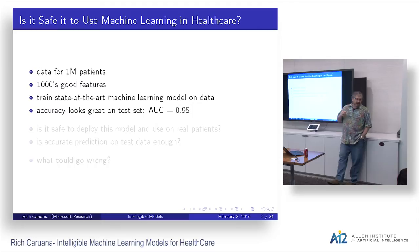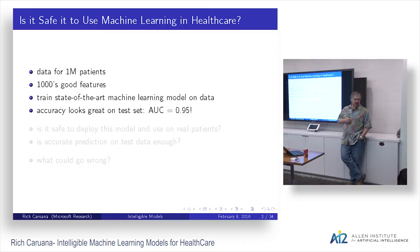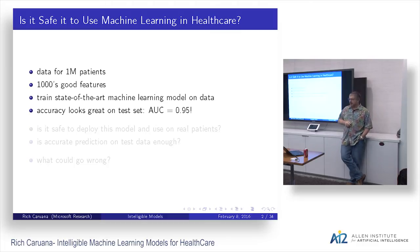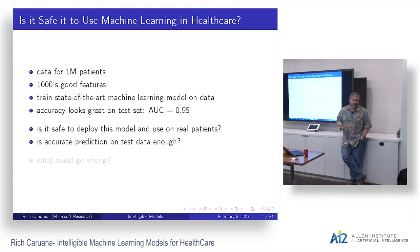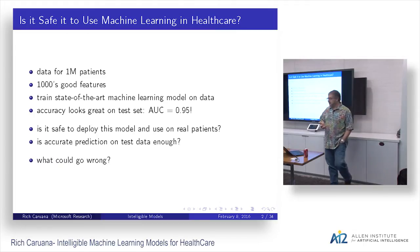What's the best case? Somebody's given you data for 10 million, 100 million patients. They've given you thousands of great features for these patients. You know machine learning, so you train a state-of-the-art model, and the accuracy looks great — you get an ROC of like 0.95 or something on test data, which is unheard of in healthcare. You don't usually get ROCs that are that great. So now the question is: is it safe to deploy this model and actually use it on live patients?